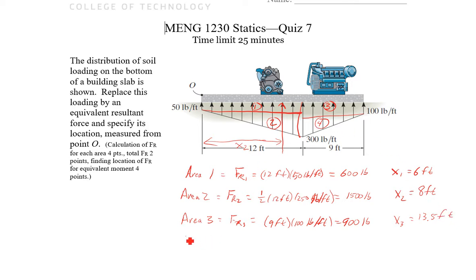And last, area four, that lower triangle on the right. FR4. One half our base, which is nine feet, times our height, which is now 300 minus 100, which makes it 200 pound per foot. So we're going to have four and a half times 200, so it's 900 pounds again. And X4, we're going to be one third from this side, so we're going to be three plus that 12, gives us 15 feet.